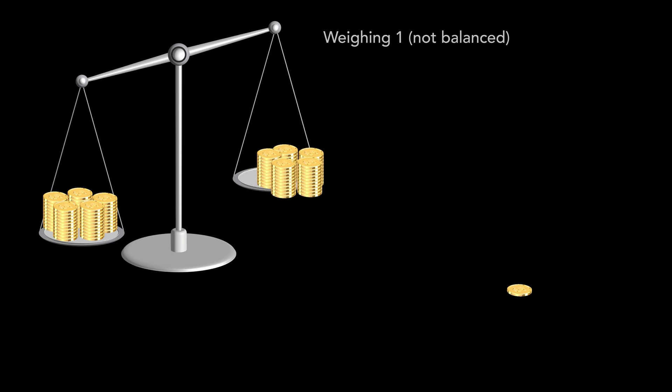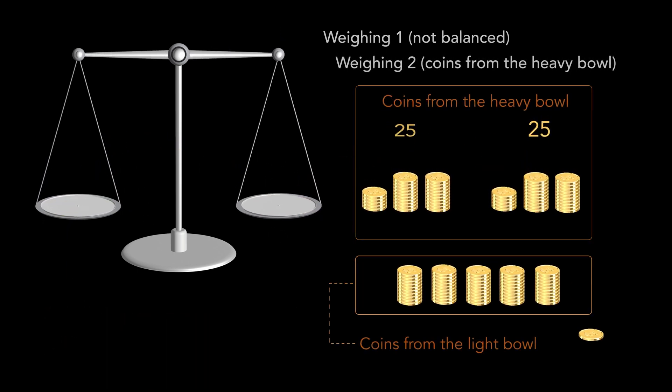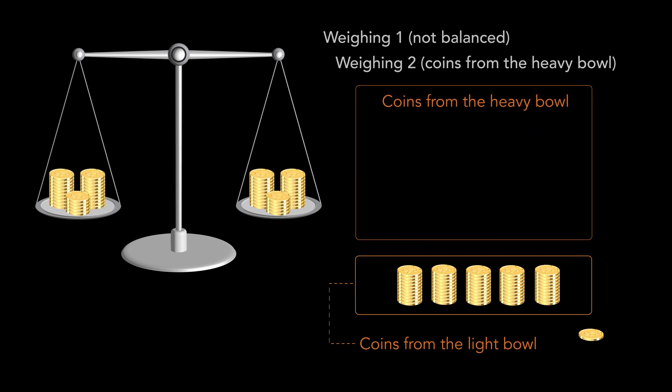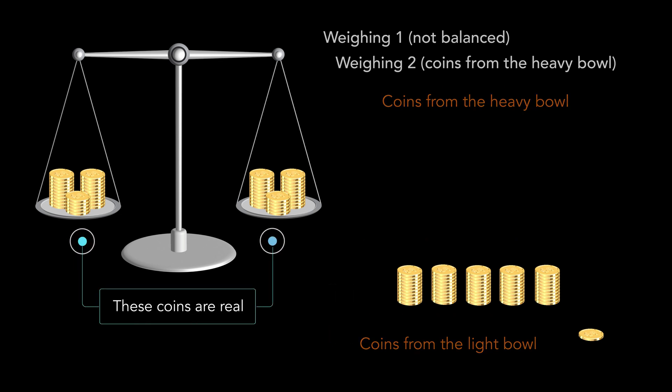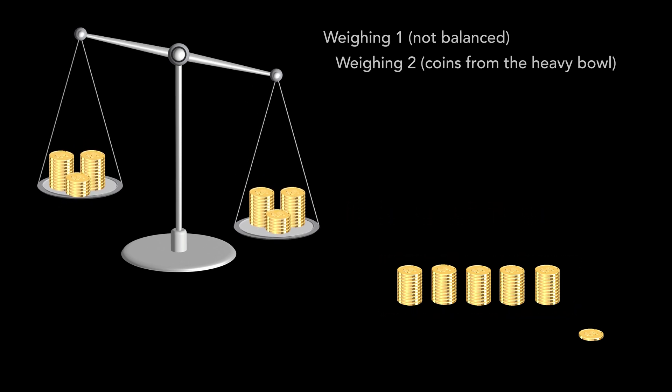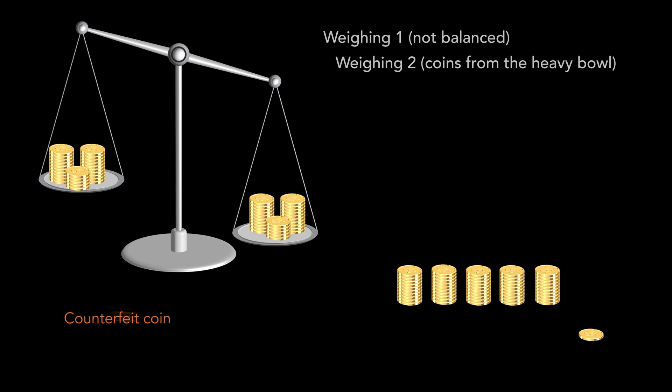Let's divide the heavy group in half and weigh the coins 25 by 25. If the scale stays balanced, then there is no counterfeit coin among the coins on the scale, and the counterfeit coin is in the light group of 50 coins, which means the counterfeit coin is lighter than the real one. If one of the arms of the scale moves down, it means that the counterfeit coin is in this heavy group of 50 coins. That means the counterfeit coin is heavier than the real one.